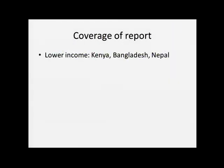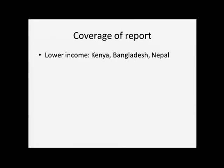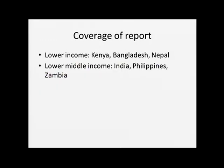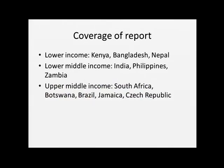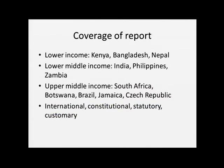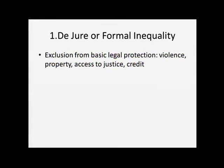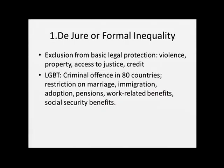One of the things which was very salient is how much de jure or formal inequality there still is — straightforward exclusion from basic legal protection including protection from violence, lack of access to property, lack of access to justice, lack of access to credit. This is particularly so for sexual orientation. Sodomy remains a criminal offense in around 80 countries, and there are restrictions on marriage, immigration, adoption, pensions, work-related benefits, and social security benefits — although France just passed a law legalizing same-sex marriage in the last couple of days.